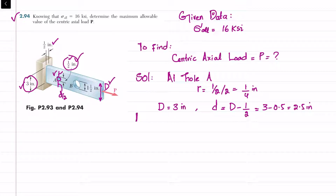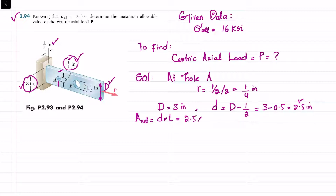The net area for hole A is small d multiplied by thickness t. In tension we remove the hole, so net area equals 2.5 inch times 0.5 inch, which gives A_net equal to 1.25 square inch.